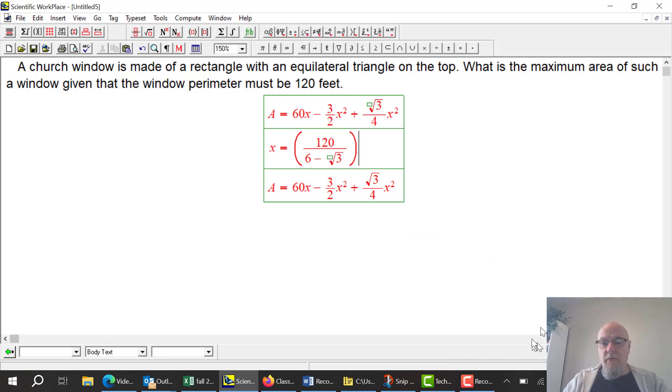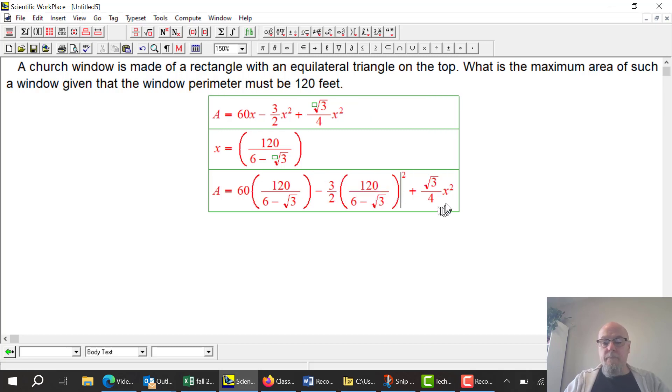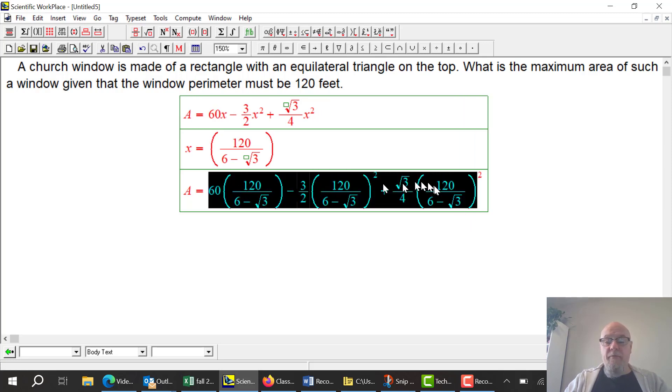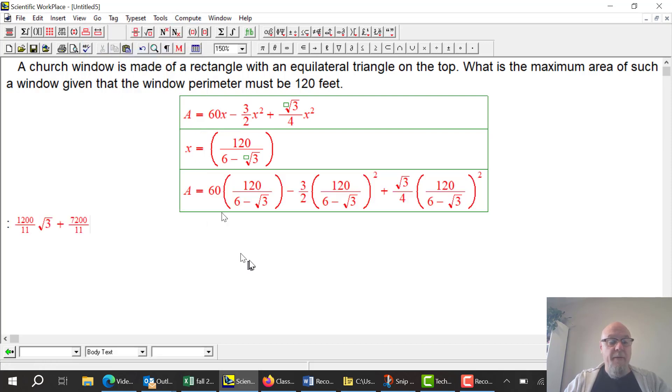So here's everything typed out, a little bit easier to read. Here's our area formula solely in terms of X. Here's what we figured out X had to be. So all I need to do then is plug that in for X. And when I simplify this, that'll be area. So let's just ask the machine to simplify it. So there's our answer.